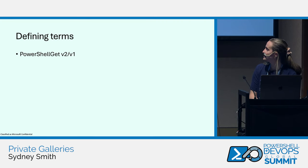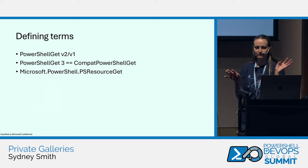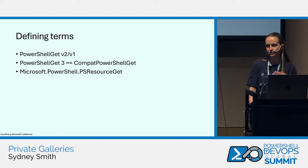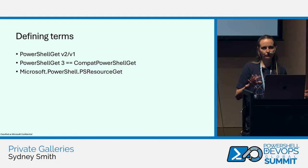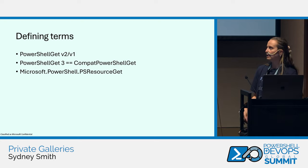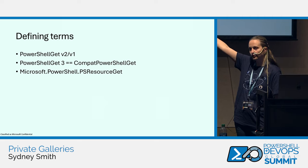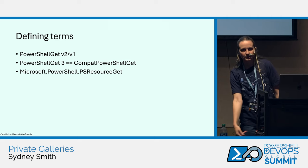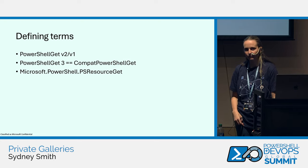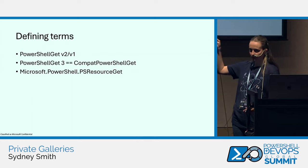First, so we're all on the same page, I like to start off this kind of session by defining a few terms because there have been some changes in the way we talk about things. We've introduced a few new terms in this gallery package management space in PowerShell recently. For a while we've talked about PowerShell Get — the module you probably all know and love. If you've ever run install-module, update-module, find-module, or publish-module, you've used PowerShell Get.